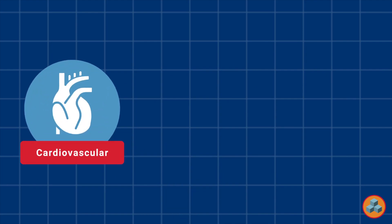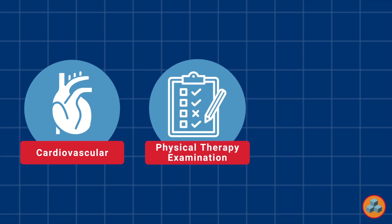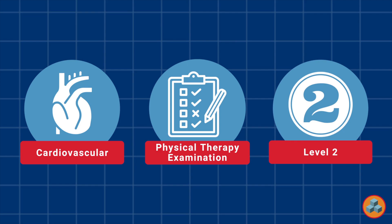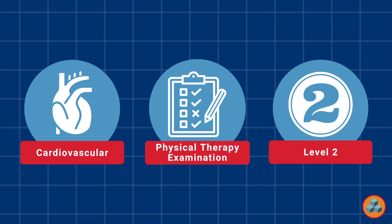System Classification: This is a cardiovascular and pulmonary systems question, which represents approximately 14% of all exam items. Content Outline Classification: The question is a physical therapy examination question, which represents approximately 24% of all exam items. Level Classification: This is a Level 2 question, since it requires students to integrate numerous pieces of information or to apply knowledge in a given clinical scenario. Remediation of Level 2 questions occurs by increasing flexibility with academic content and by carefully analyzing decision-making processes when answering applied examination questions.